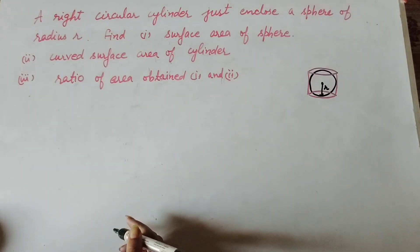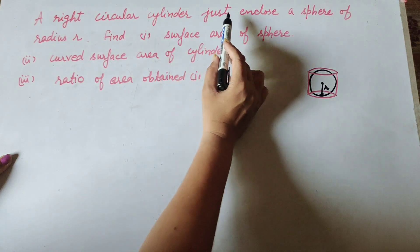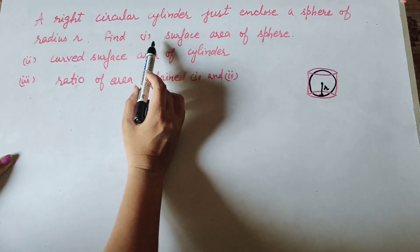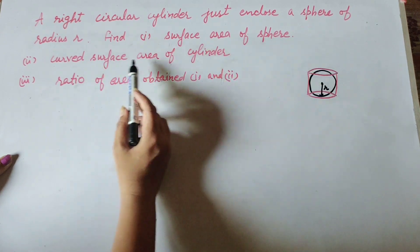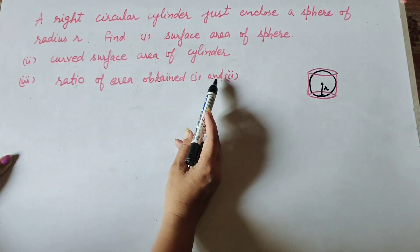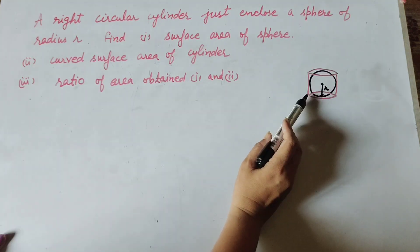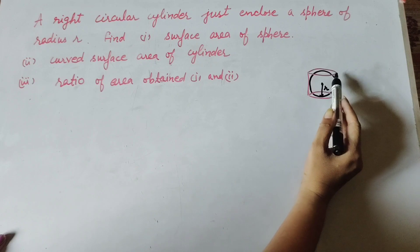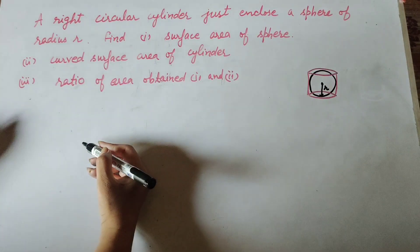Hello friends, welcome to my channel. In this video we discuss: a right circular cylinder just encloses a sphere of radius r. We need to find: first, the surface area of the sphere; second, the curved surface area of the cylinder; and third, the ratio of the areas obtained in one and two. This is the figure given in your NCERT book — a sphere enclosed in a cylinder of radius r.